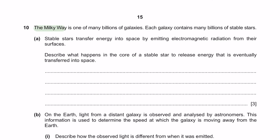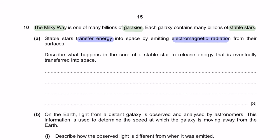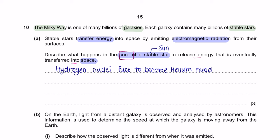The Milky Way is one of many billions of galaxies, each containing many billions of stable stars. Stable stars transfer energy into space by emitting electromagnetic radiation from their surfaces. An example of a stable star is the Sun. In the core of a stable star, hydrogen nuclei fuse together to form helium nuclei — this process is known as nuclear fusion, and it releases energy that is eventually transferred into space.